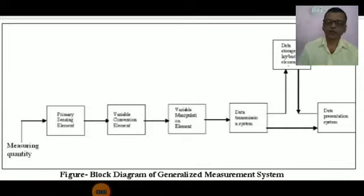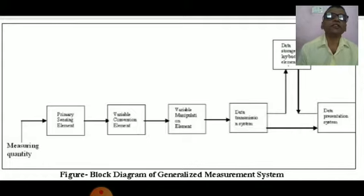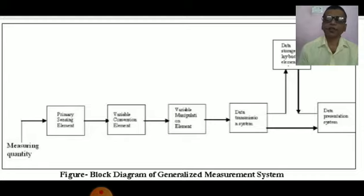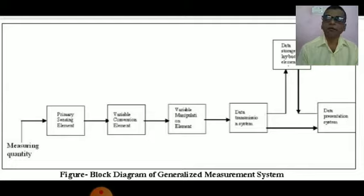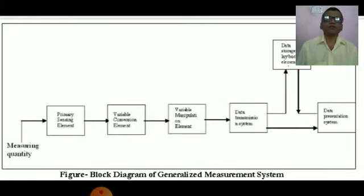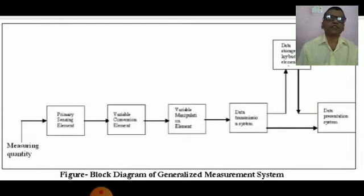Good morning students. Today we will discuss about generalized measurement system. On the screen you can see the block diagram of generalized measurement system. A generalized measurement system — an instrument may be defined as a device or a system which is designed to maintain a functional relationship between physical variables and must include ways of communication to the observer. The usual operation of a measuring instrument can be described in terms of functional elements.